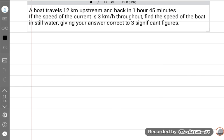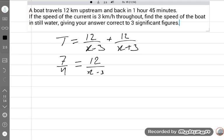By the given condition, total time is equal to upstream and downstream time. Time is distance upon speed. 12 upon x minus 3 plus 12 upon x plus 3. So time is 7 upon 4 total time. We will take LCM.